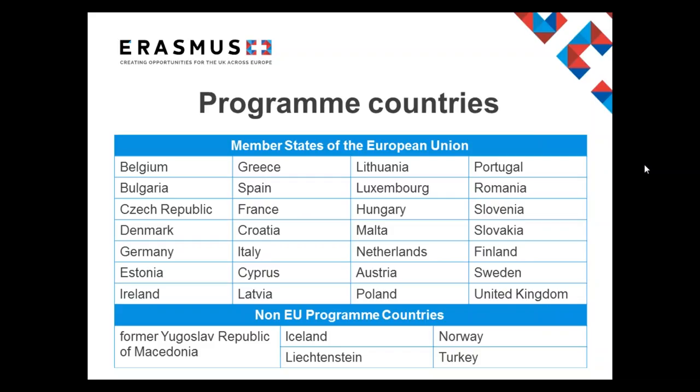Under Erasmus+, there are two types of countries categorised: programme countries and partner countries. Partner countries tend to be the rest of the world, and unfortunately for Key Action 1 for schools, they are not eligible destinations. So the only countries where participants can go are the programme countries currently listed on the screen — these are the destinations where your school staff could go as part of their Key Action 1 application. Domestic travel is not eligible, so staff cannot undertake their activities in the UK. All activities must be transnational, meaning people need to go from the UK elsewhere.